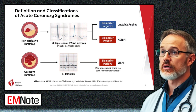Acute coronary syndromes encompass a spectrum of conditions caused by reduced blood flow to the heart muscle. These include unstable angina, non-ST elevation myocardial infarction, and ST elevation myocardial infarction.